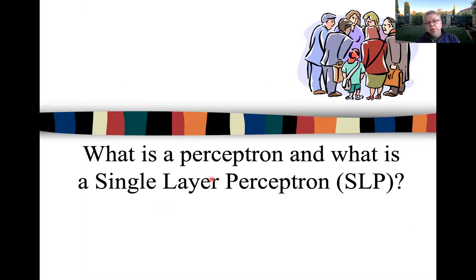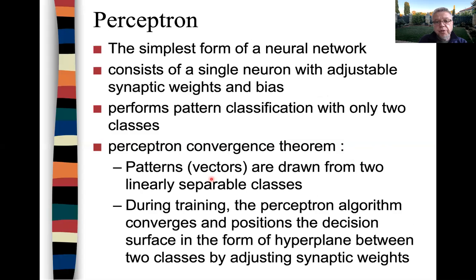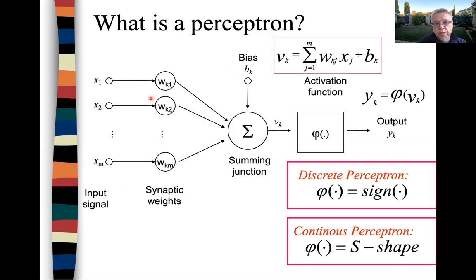So what is a perceptron and what is a single layer perceptron? The perceptron is the simplest form of a neural network. It consists of a single neuron with adjustable synaptic weights and bias. You have your input signal multiplied by the synaptic weights, and the whole thing is summed and compared to a bias. If you use your activation function to be the sign function and the activation is greater than your bias, then the perceptron or neuron would fire.